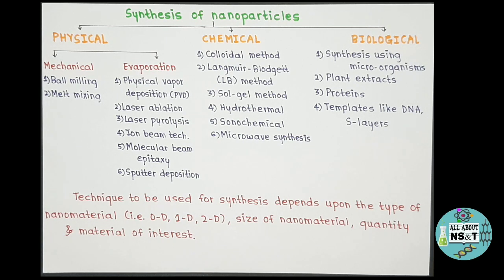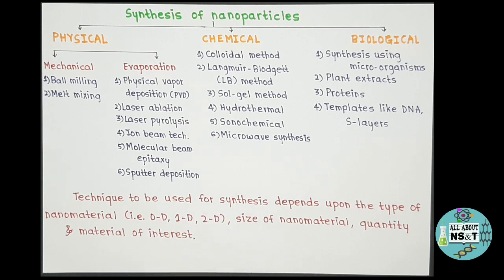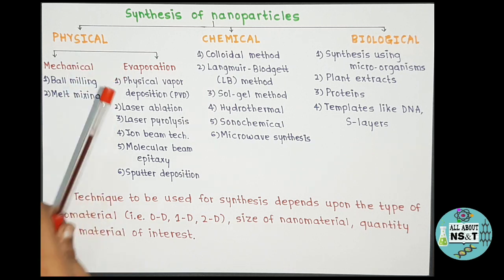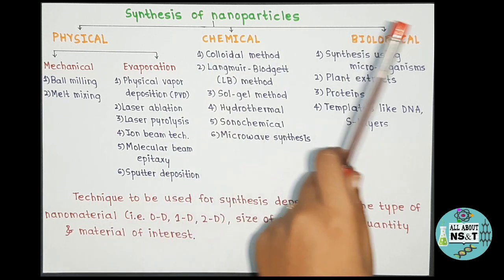For now, just remember the different techniques of synthesis and which technique comes under which category — in upcoming videos we will have an elaborate explanation of each. Each technique has its own advantages and disadvantages, and the technique to be used depends upon the type of nanomaterial (zero-, one-, or two-dimensional), size, quantity, and material of interest. For example, if you want to synthesize thin films — which are two-dimensional nanomaterials — you must use the physical route, as you cannot synthesize thin films using the chemical or biological routes.